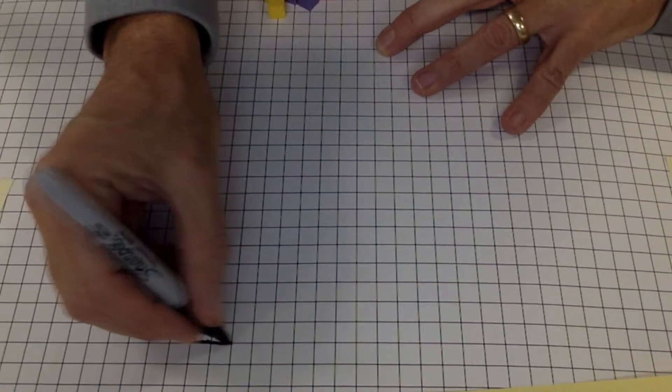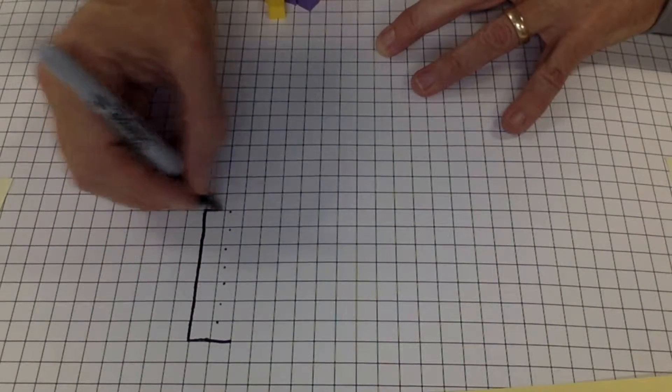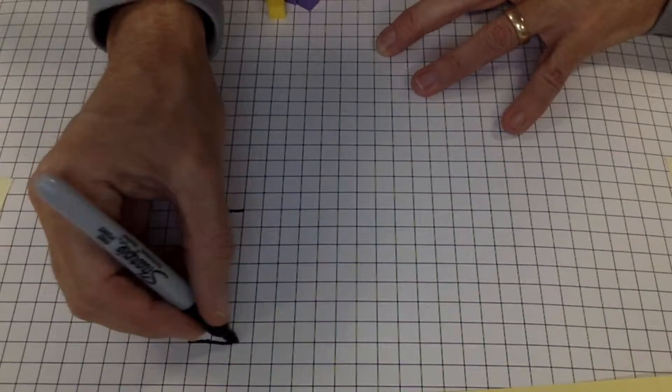And then if I draw another one here, I think 8, 9, 10, 11, 12, 13, 14. Expanding it to another row.